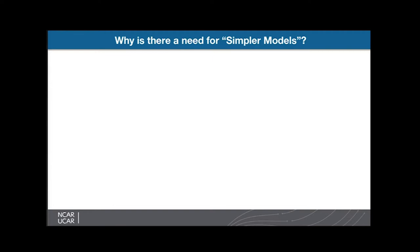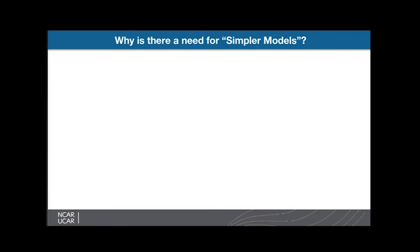So just a brief motivation: why is there a need for simpler models? Our Earth System models have really increased massively in complexity, covering a wide range of complex processes. As was nicely put by Isaac Held in his BAMS paper in 2005, as you have this increase in complexity, you start to have this gap between our abilities to simulate the system and our abilities to understand it.